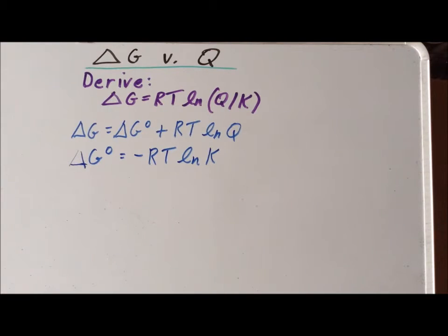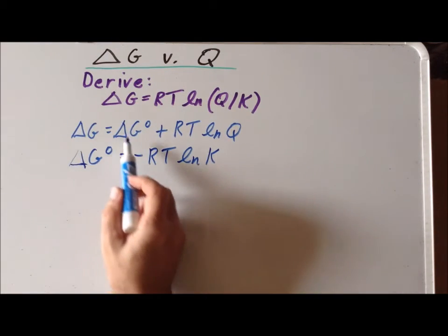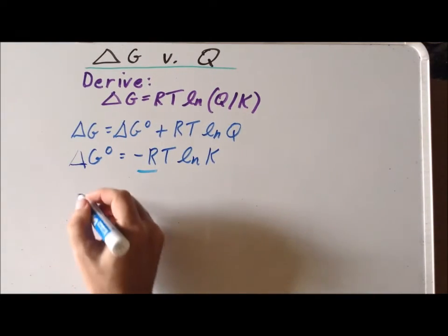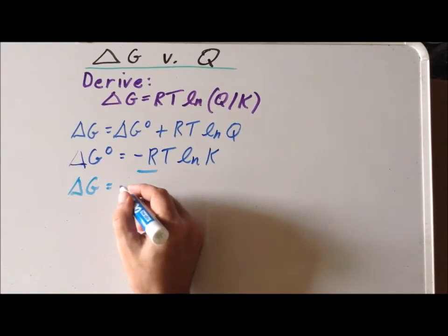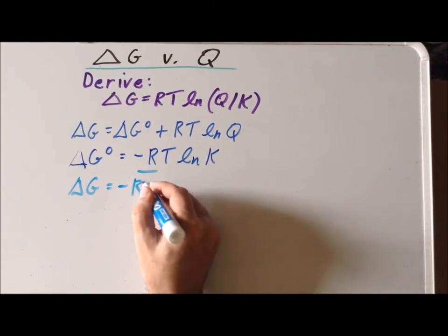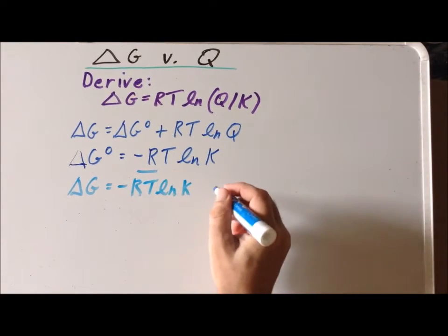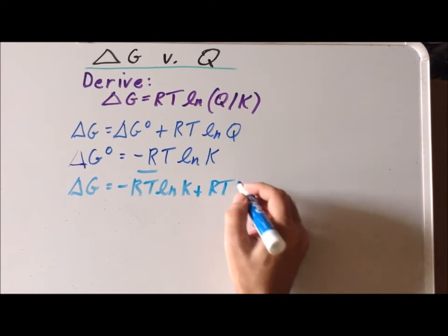In our next step, we simply substitute this expression for delta G naught into the first equation. If we do that, we get that delta G is equal to minus RT times the natural log of K plus RT times the natural log of Q.